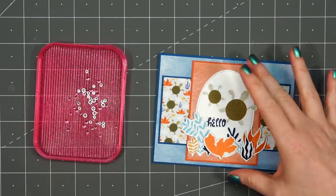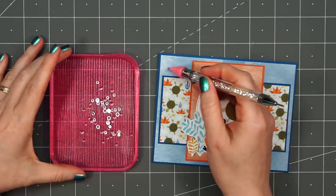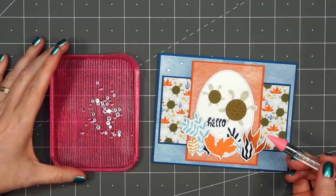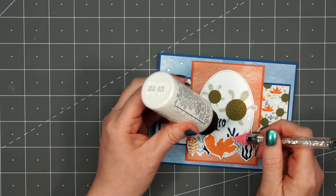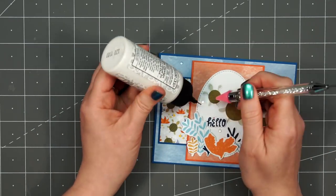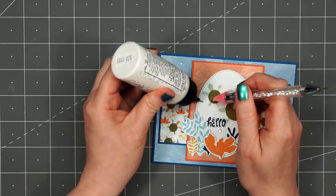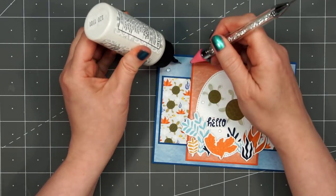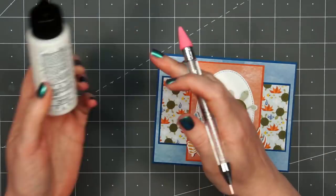To finish off the card, I'm bringing in some dew drops. I'll put two of them in the upper left-hand corner, and then three around the plants and the turtles. I'm using an embellishment tool to pick them up since they don't have adhesive on the back, and I'll add just a small drop of liquid adhesive. I like barely art liquid glue.